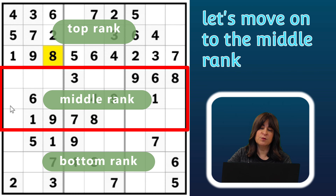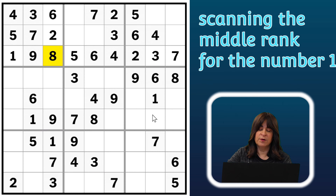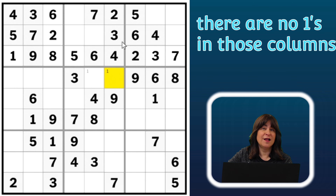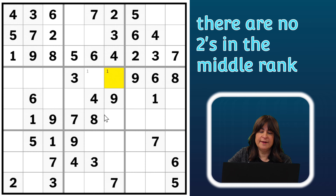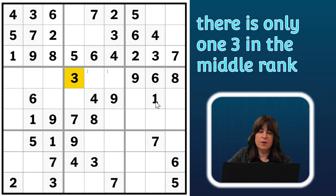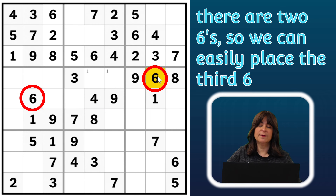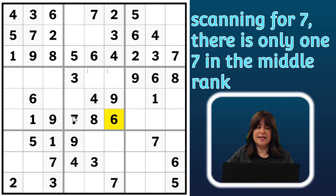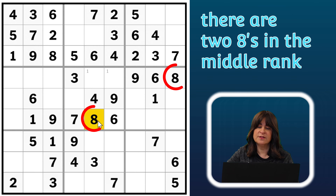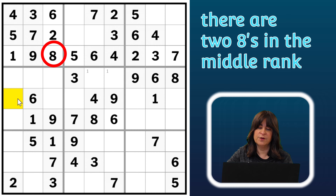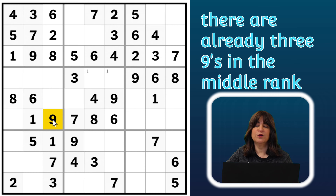Let's move on to the middle rank — that's the middle group of horizontal rows. Starting with the number one: there are two ones, so the third one has to go into one of these two cells, so let's pencil that in. There are no ones in those columns, so the one can be in either cell. There are no twos in the middle rank. Three — there's one three. Four — there's one four. Five — there are no fives. Six — there are two sixes, so we can place the third six here. Seven — there's only one seven. Eight — there are two eights, so I can pencil in eights in one of these two cells, but because there's an eight in this column, the eight can go here. So we're done scanning all numbers one through nine in the middle rank.